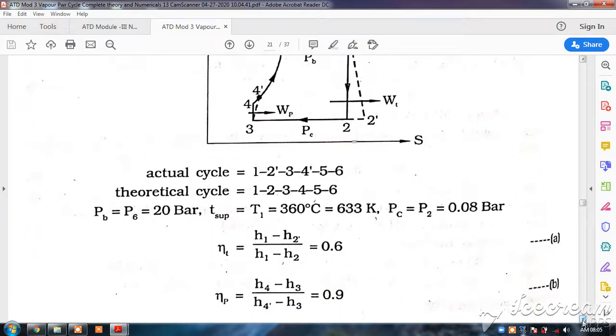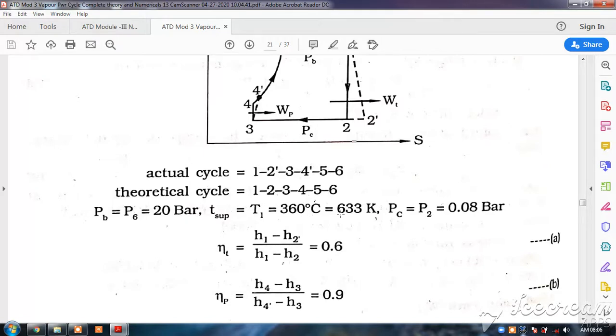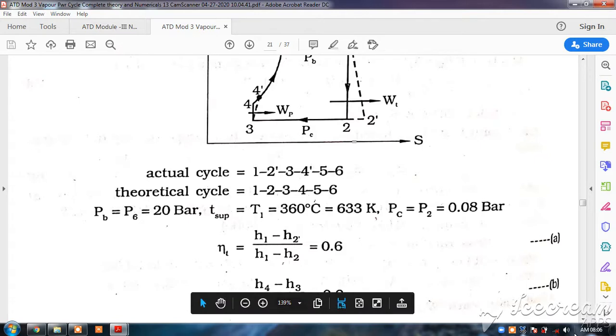Now, you see the boiler pressure P6 is equal to 20 bar, T superheated is equal to 360 degrees, that is 633 Kelvin. Pc is equal to P2 is equal to 0.08 bar, that is condenser pressure.